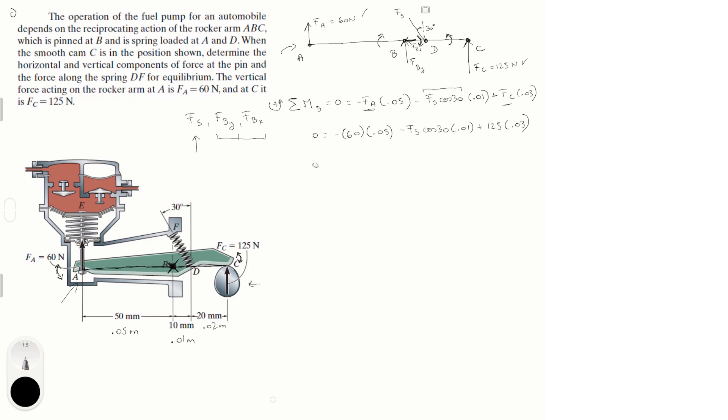0 is equal to negative 60 times 0.05 minus F_S, which is what we're trying to find, cosine of 30 times 0.01 plus F_C which is 125 times 0.03. This is equal to negative 3 minus 0.00866 F_S plus 3.75. Solve for F_S and you should get that this is equal to 86.6 newtons. And we got F_S.